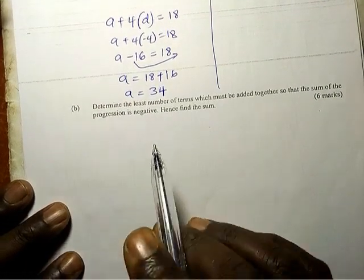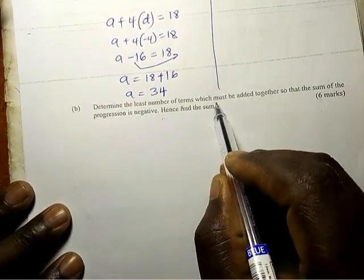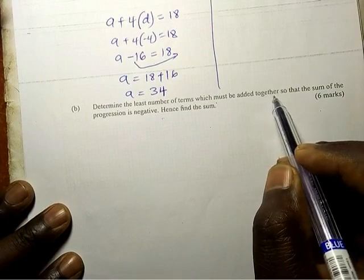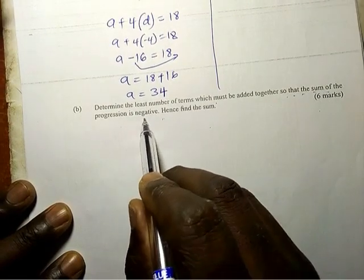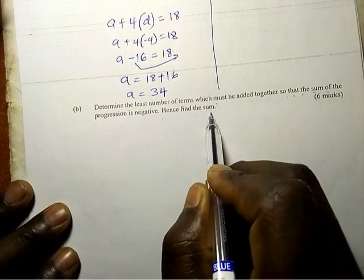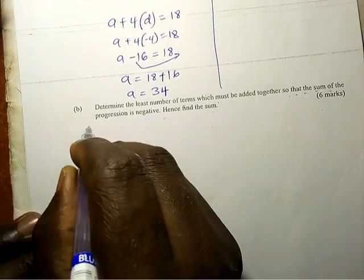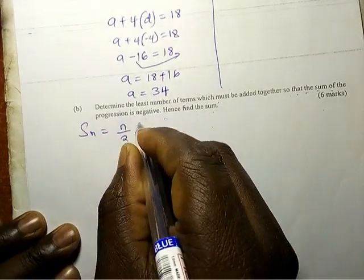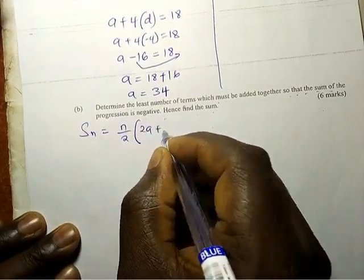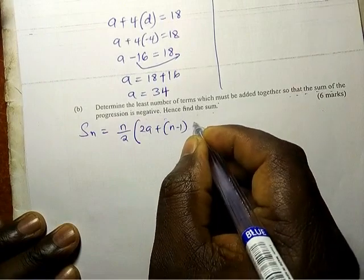Determine the least number of terms which must be added together so that the sum of the progression is negative. Hence find the sum. So we know that the sum Sn is equal to n over 2 into 2a plus into n minus 1 times d.